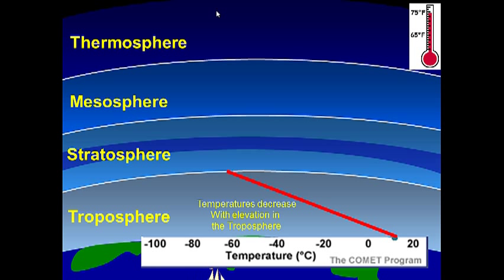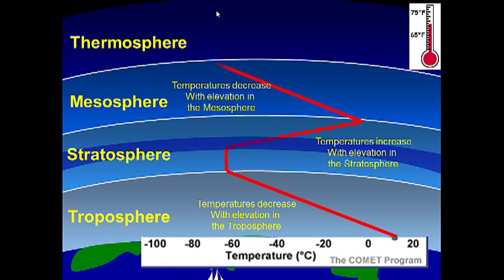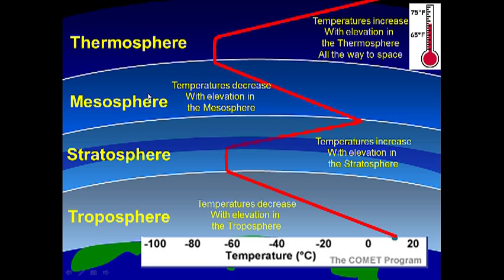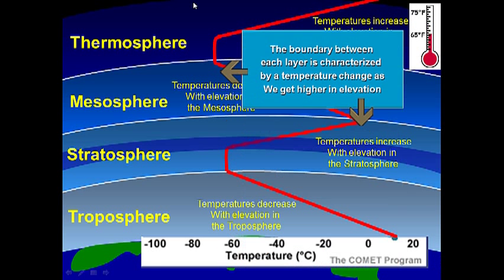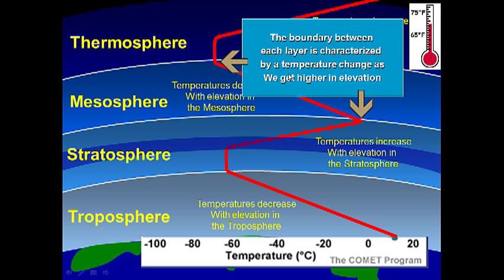Above the mesosphere, where air is very, very thin with hardly any air molecules at all, is the thermosphere. Up here is where the space shuttle operates and where zero gravity begins. The aurora borealis — the northern and southern lights — also take place in the thermosphere. Finally, temperatures once again increase with elevation in the thermosphere all the way to space. We know this because we send weather balloons with thermometers to record the temperature. The boundary between each layer is characterized by a temperature change as we get higher in elevation.